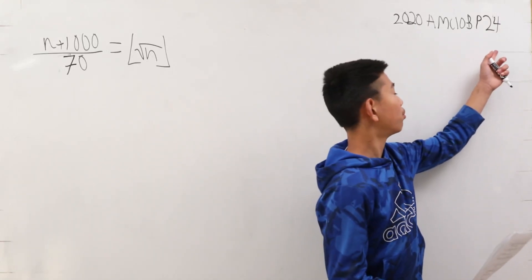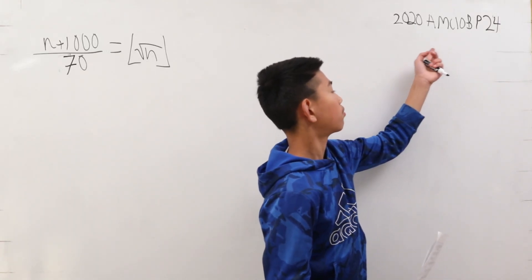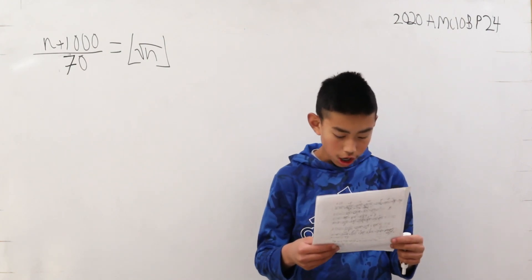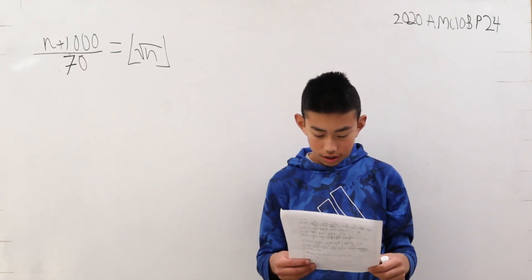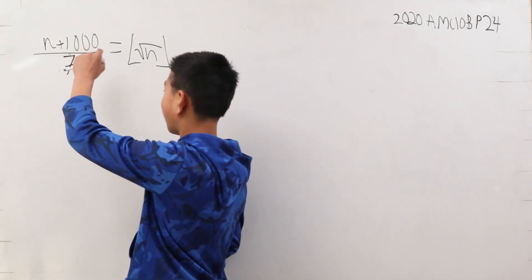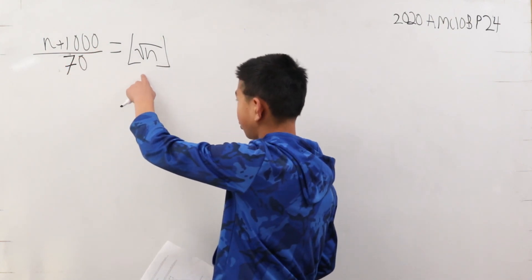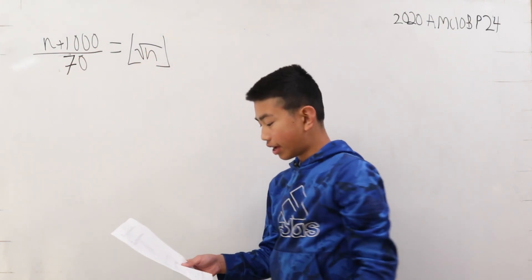We are now solving problem 24 from the AMC 10B from 2020. How many positive integers n satisfy n plus 1,000 over 70 is equal to the floor of the square root of n?